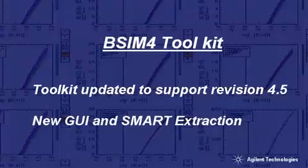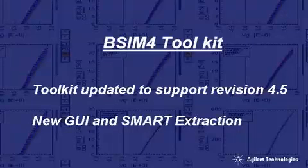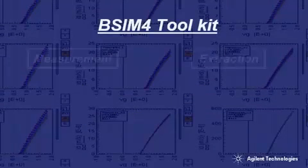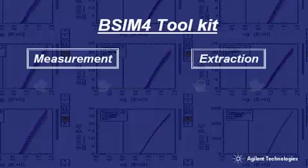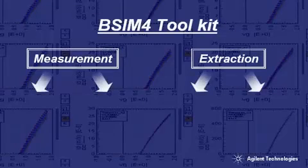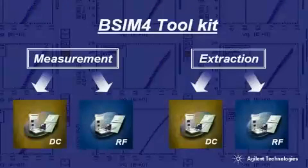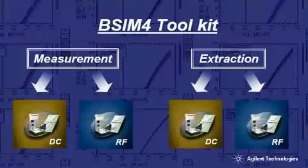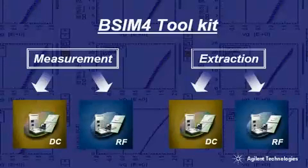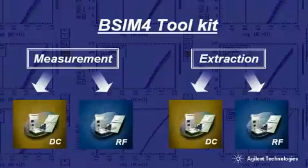Second, the release has a new facelift with a new and efficient interface. The toolkit is broken down into two components, each having two subcomponents. By design, the two main components are the measurement module and the extraction module. Each main component has two subcomponents, one DC and one RF. This structure allows you to separate the measurements from the extractions and the DC from the RF if necessary. All are fully integrated into a common extraction.